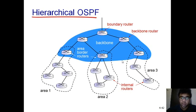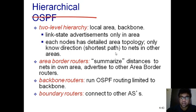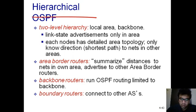In the two-level hierarchy of OSPF, there are local areas and the backbone area. Link state advertisements are only flooded within each area. Each node has detailed area topology but only knows direction and shortest path to networks in other areas. Area border routers summarize distances to networks in their own area and advertise to other area border routers. Backbone routers present in the backbone area run OSPF routing limited to that backbone area only.